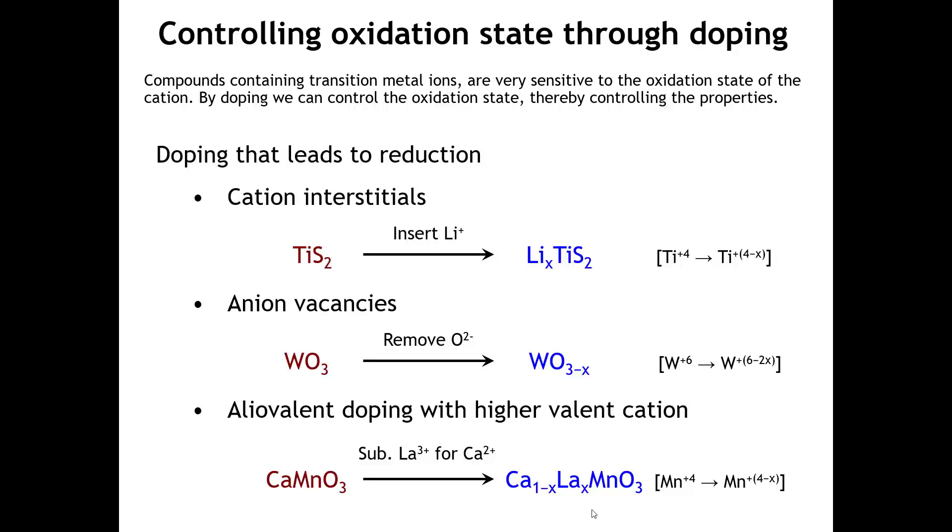We can also use doping to affect reduction of the cation oxidation state. TiS2 was an electrode in the very early lithium-ion batteries, and as the battery discharges, you intercalate lithium in between the titanium sulfide layers. When you do that, to compensate for this positive charge coming into the crystal, the titanium gets reduced from 4-plus to something below that.